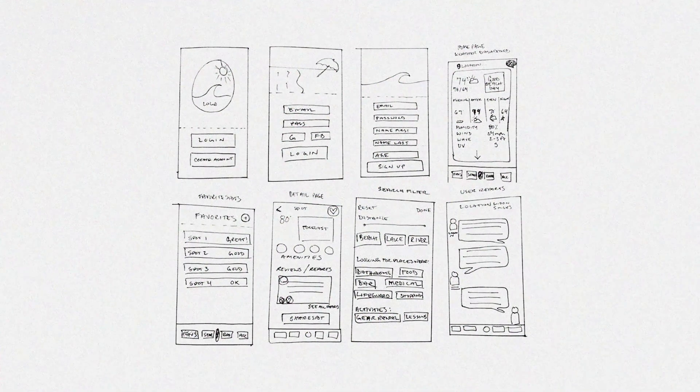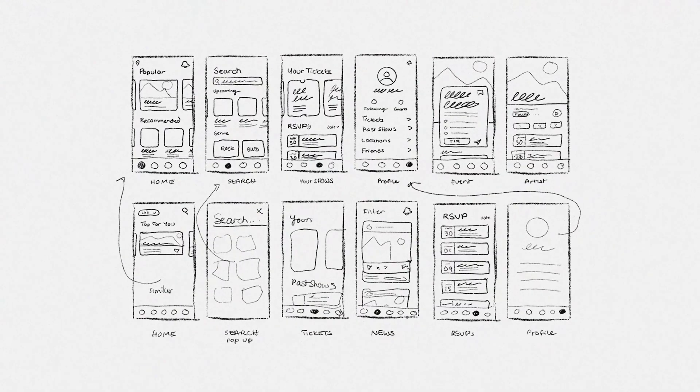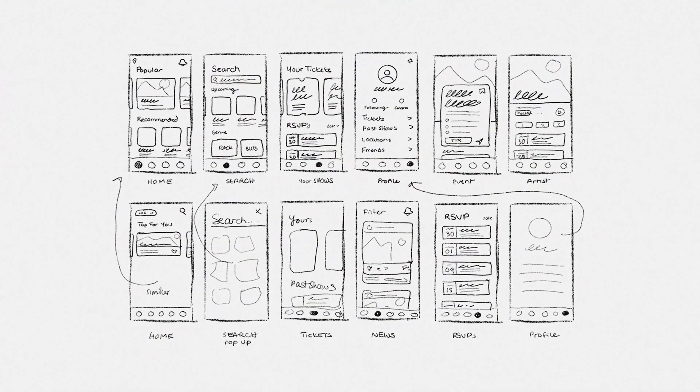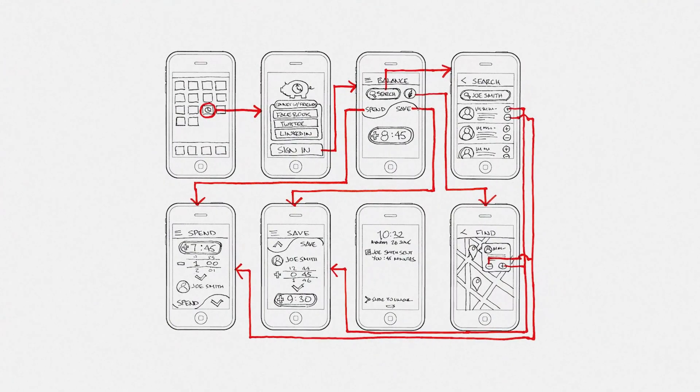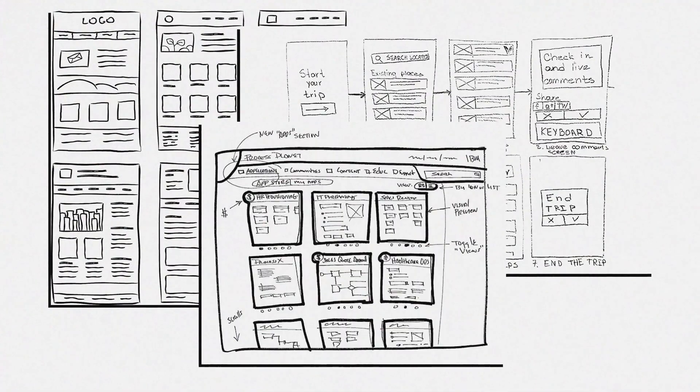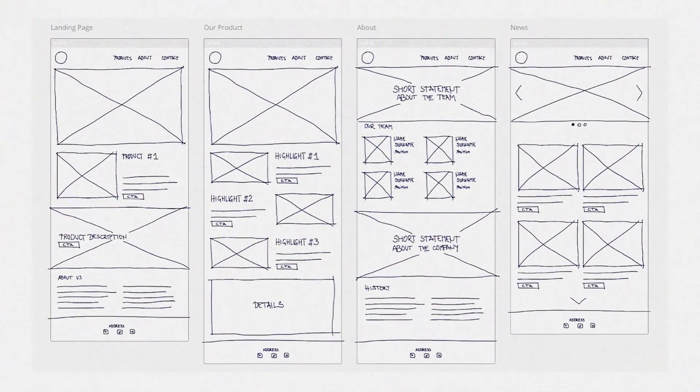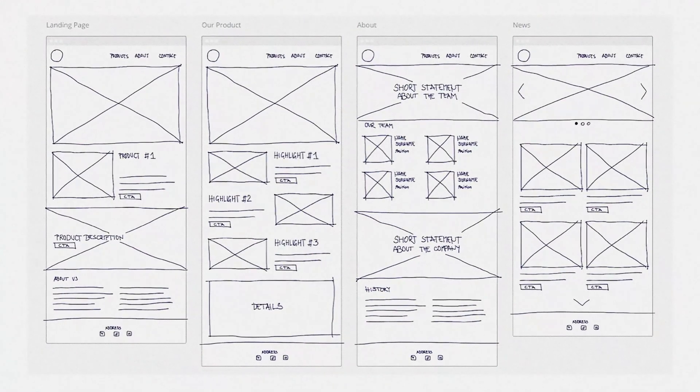When adding wireframes to your case study, make sure they earn their place. Use them to show your thought process — how you planned layouts, made functional decisions, and evolved your ideas. Highlight key iterations to demonstrate how your design improved over time. If a wireframe helped you solve a specific user problem, call that out. But don't just drop a bunch of gray screens and call it a day. Always provide context — explain why a certain approach made sense and how it shaped the final output. Only include wireframes that add value to your story, not everything. Wireframes should support your narrative, not just sit there as a formality.